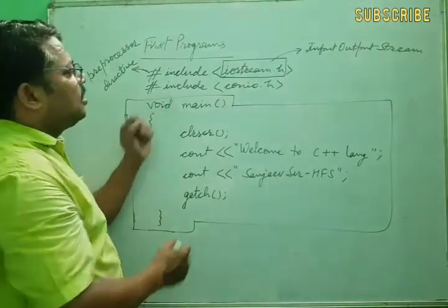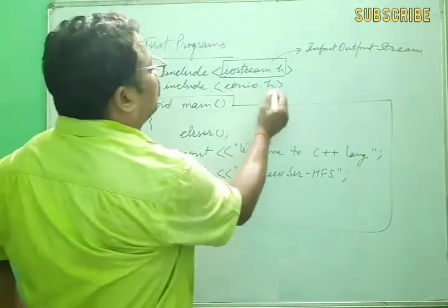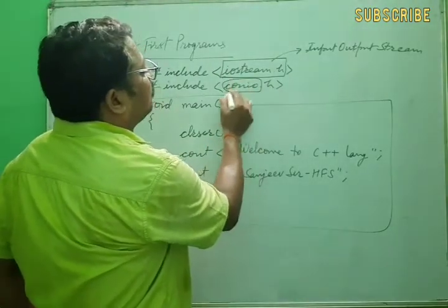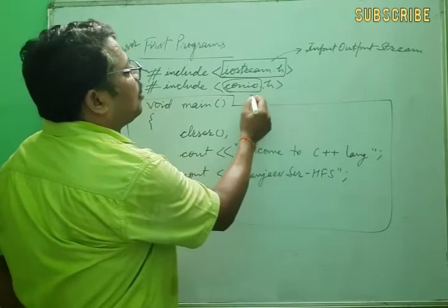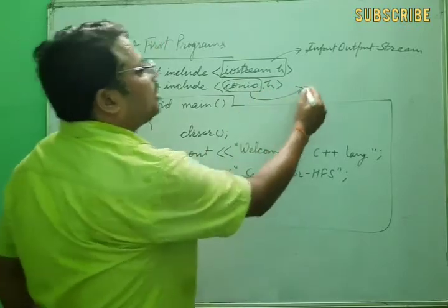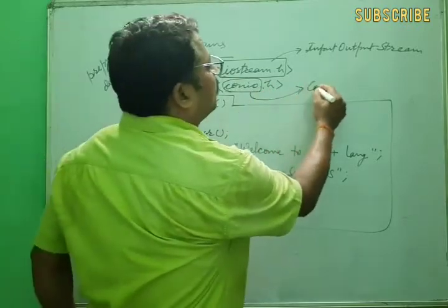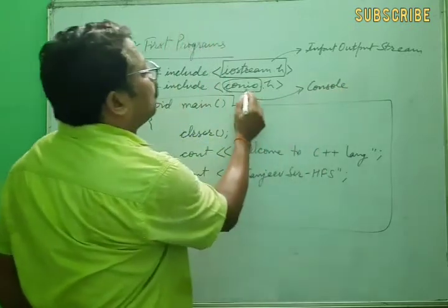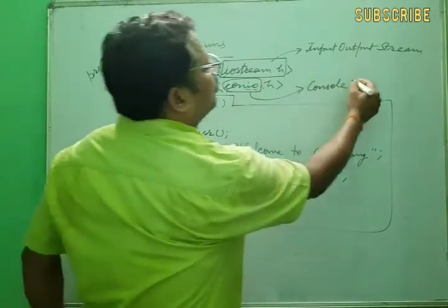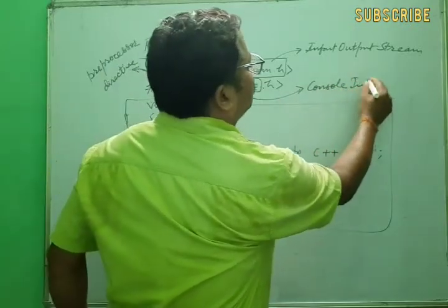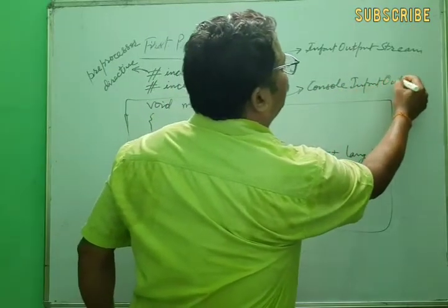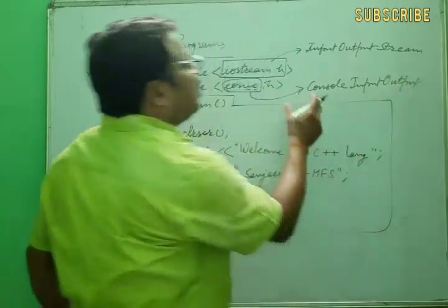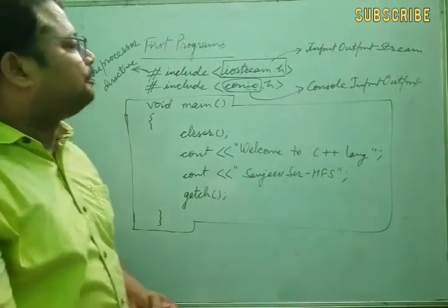The second header file is conio.h. Conio means console input/output — that means input and output related to the console. Now we understand what console input/output means.